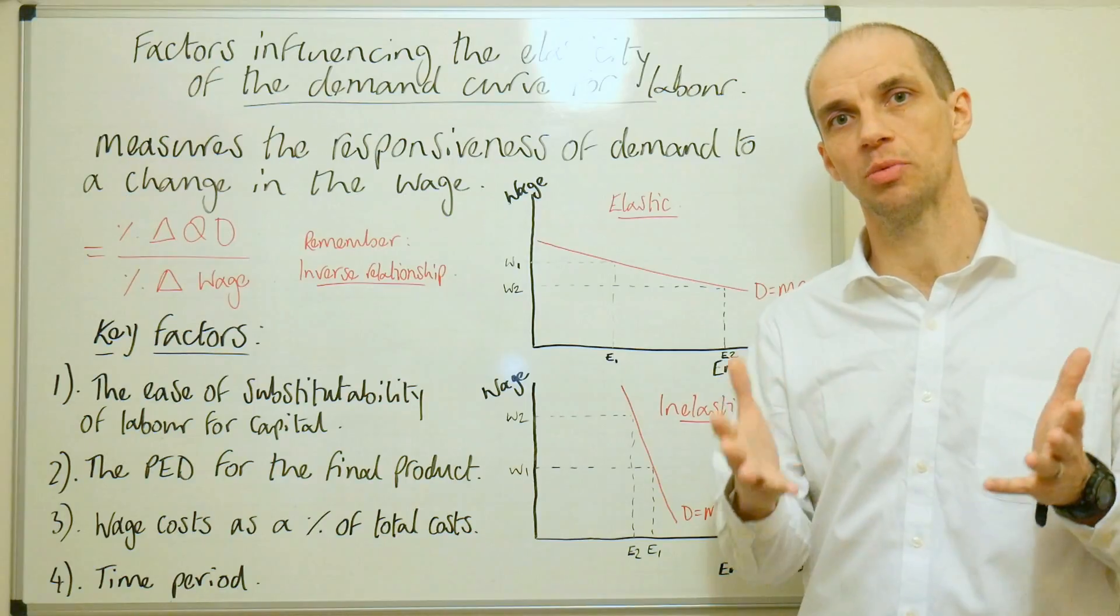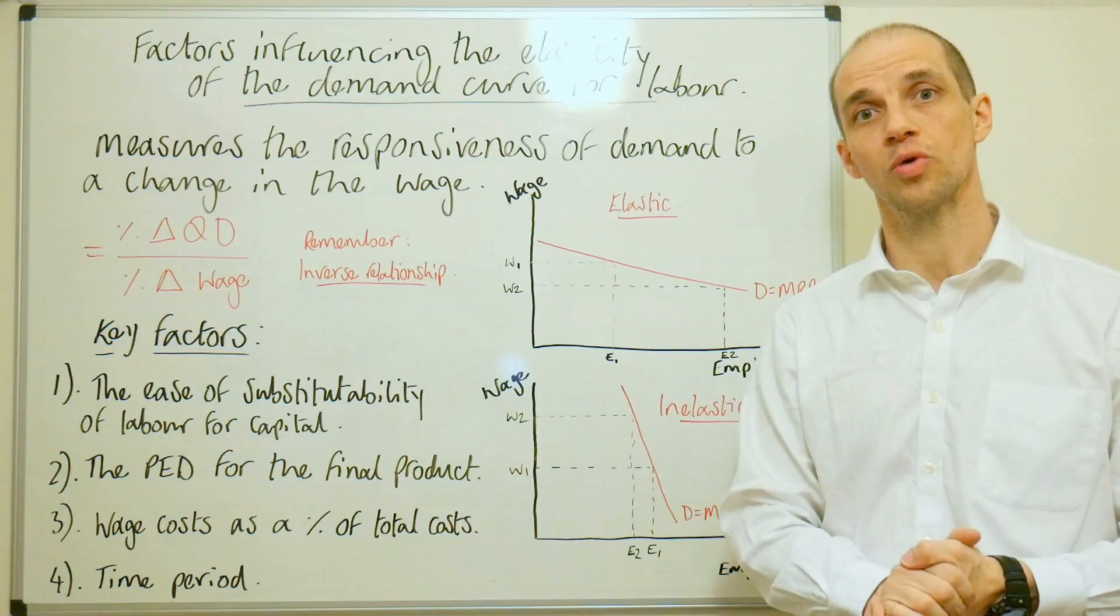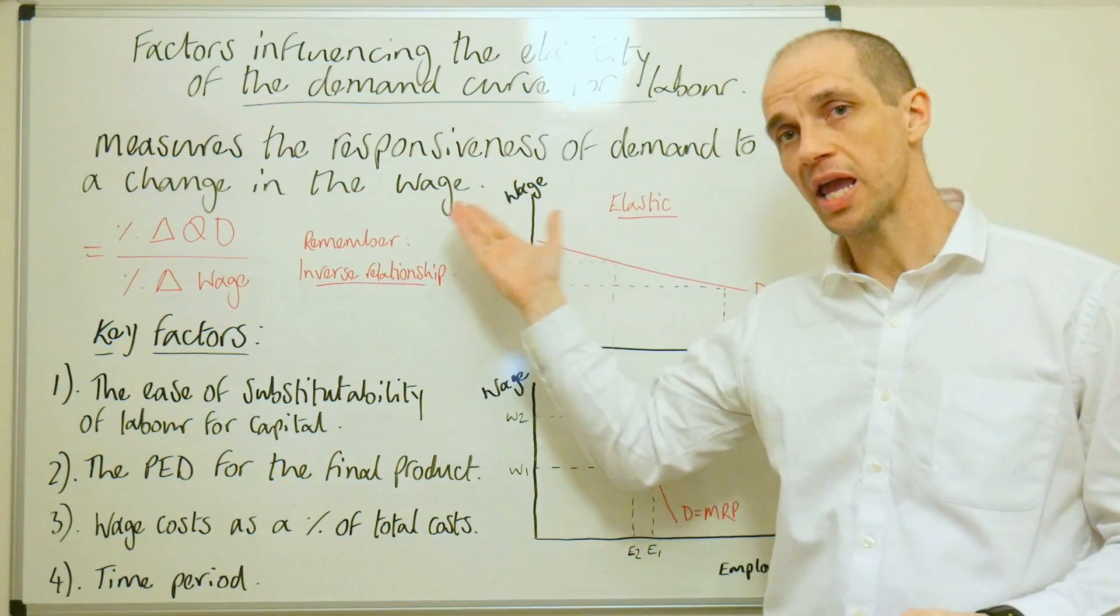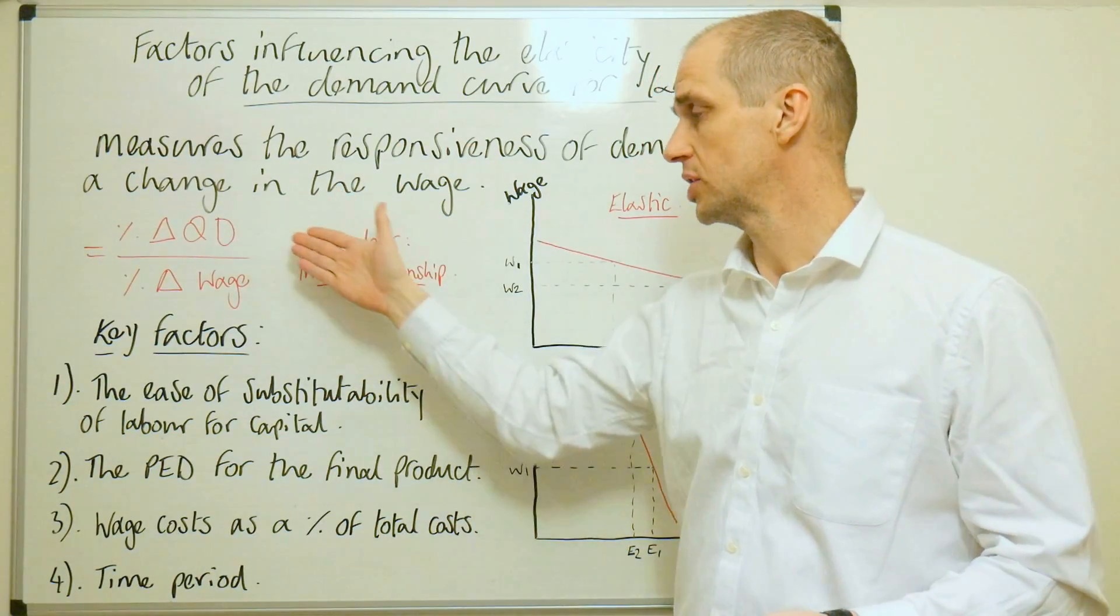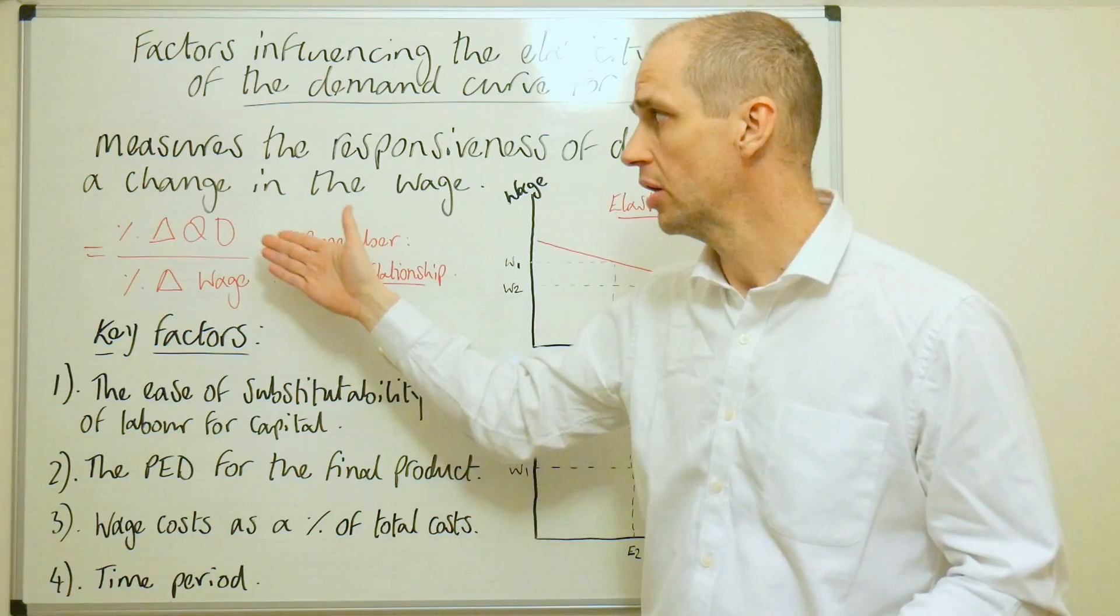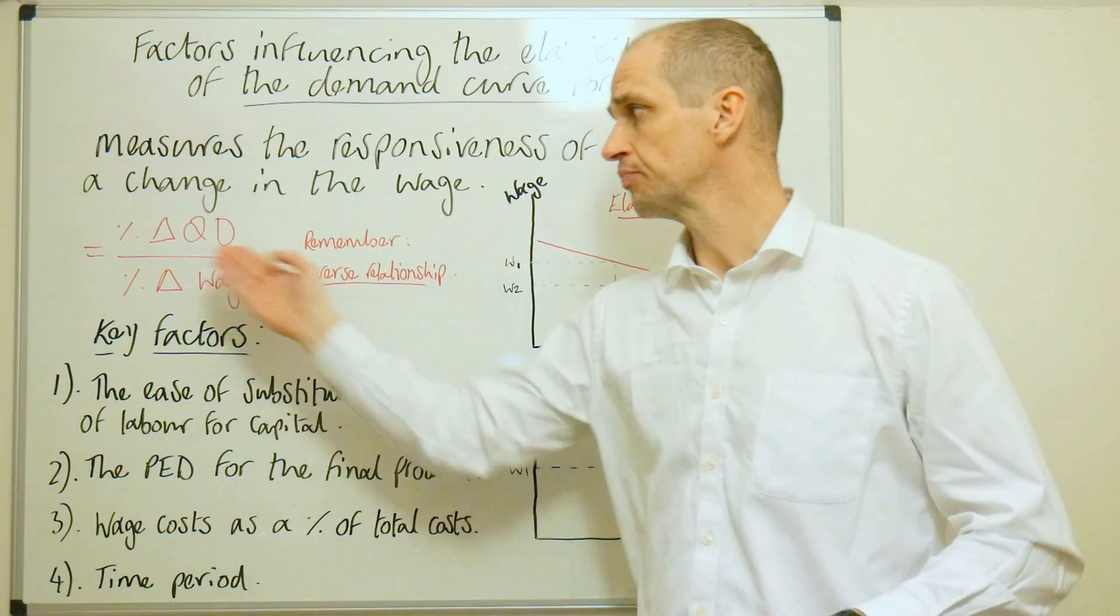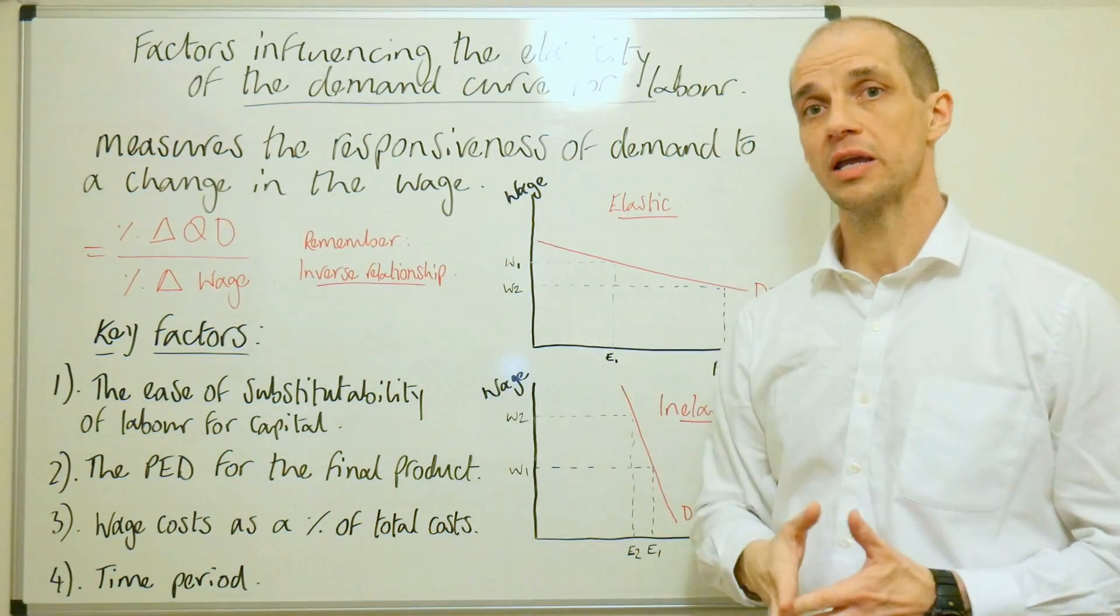The elasticity of demand for labor simply measures the responsiveness of demand to a change in the wage rate. So we can see our definition here. And to calculate this elasticity of demand for labor, all we simply do is take the percentage change in the quantity demanded and divide that by the percentage change in the wage rate, or the price of labor.